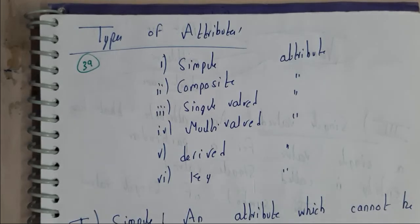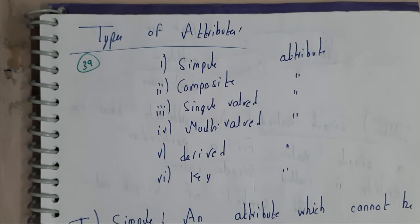Hello guys, we are back with our next tutorial. In this tutorial, let us go through types of attributes. Attributes are divided into six types: simple attribute, composite attribute, single-valued attribute, multi-valued attribute, derived attribute, and key attribute.